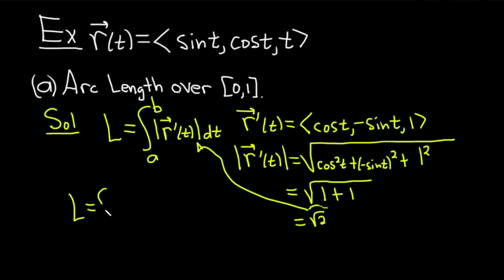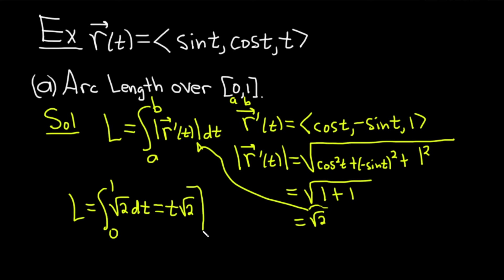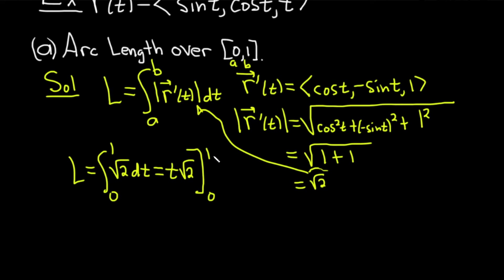Now we plug this into our formula. L is the integral from 0 to 1 — a is 0 and b is 1, as given in the problem. The magnitude we found is the square root of 2, and we're integrating with respect to t. Because we're integrating a constant, we attach the variable: t times the square root of 2, evaluated from 0 to 1. Plugging in 1 gives 1 times root 2; plugging in 0 gives 0. We end up with the square root of 2, which is the arc length of this vector-valued function over [0, 1].